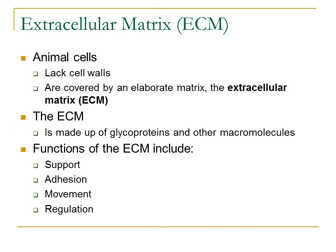Something that animal cells have that plant cells don't is an extracellular matrix surrounding the cell. Animals lack cell walls, but they're covered by this abbreviated ECM — extracellular matrix. Basically, it's a bunch of proteins and other types of macromolecules that surround an animal cell. Its different functions include providing support, allowing a cell to move, helping animal cells adhere to something, and helping to regulate different substances in and out of the cell. That substance of proteins and molecules surrounding animal cells is called the extracellular matrix.